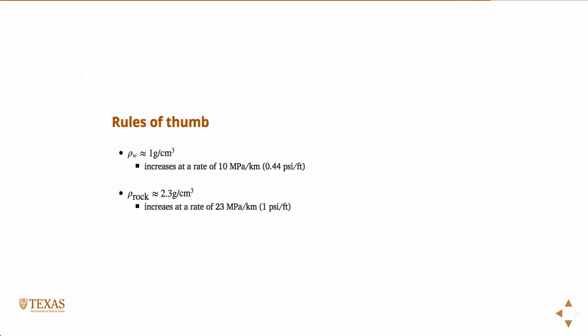So a couple rules of thumb. The density of water is one gram per centimeter cubed. That's, in fact, the definition of a gram. And that's what a gram is, the mass of a cubic centimeter of water. So that's easy. And that increases at a rate of about 10 megapascals per kilometer. So that's something that's pretty easy to remember, 10 megapascal per kilometer. So that's how the overburdened stress increases. 10 megapascal per kilometer.